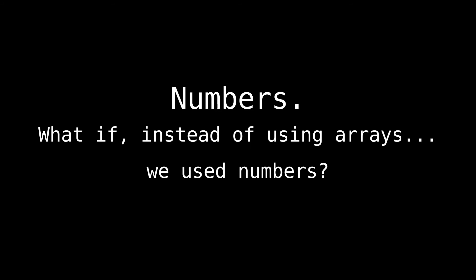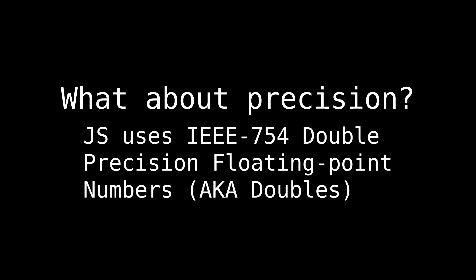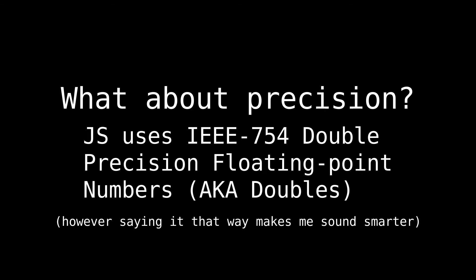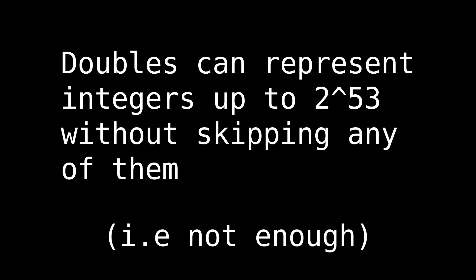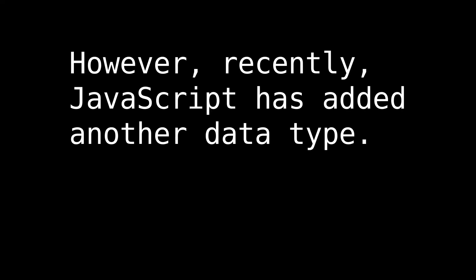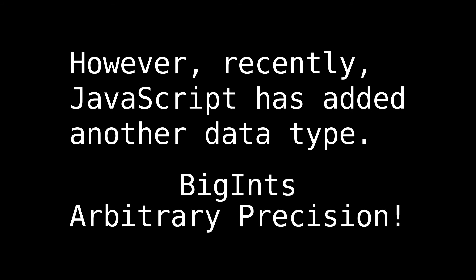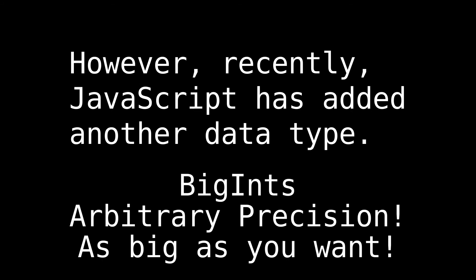But wait — don't numbers have limited precision? JavaScript uses IEEE 754 double precision floating point numbers, which can represent integers up to 2 to the 53 without skipping any of them. This might seem like a deal breaker. However, recently JavaScript has added another data type: BigInts. These are arbitrary precision integers, meaning you can make them as big as you want. This negates the issue of precision entirely.